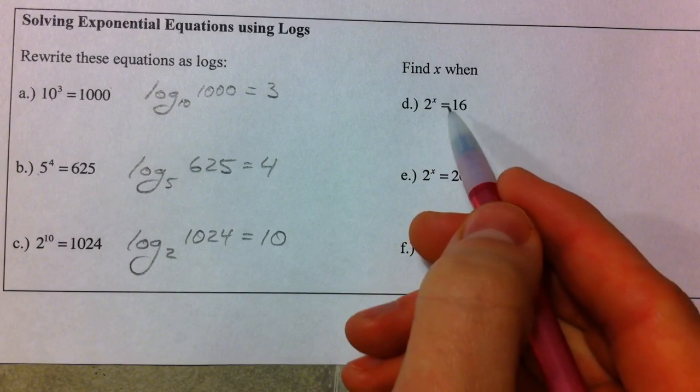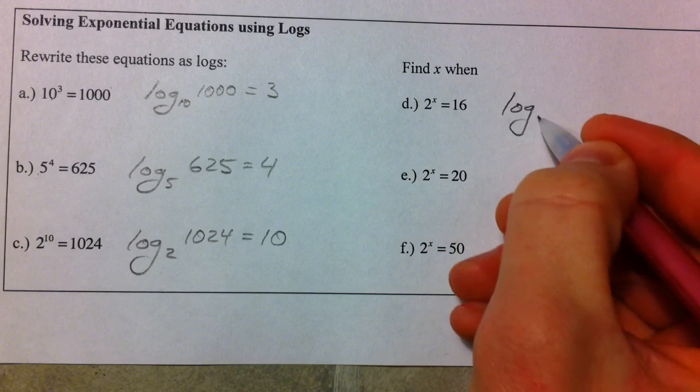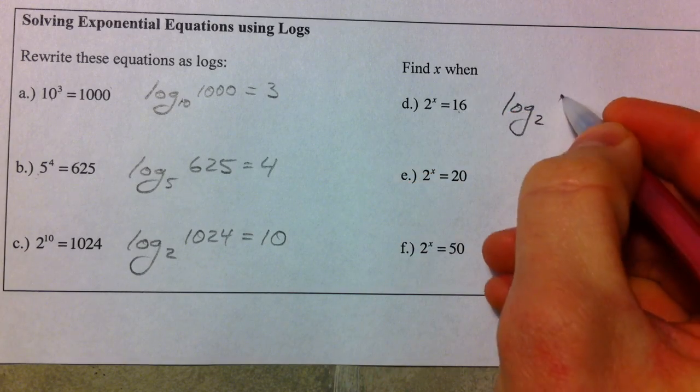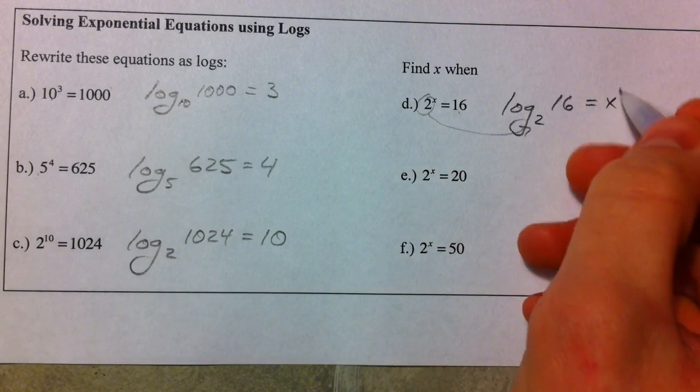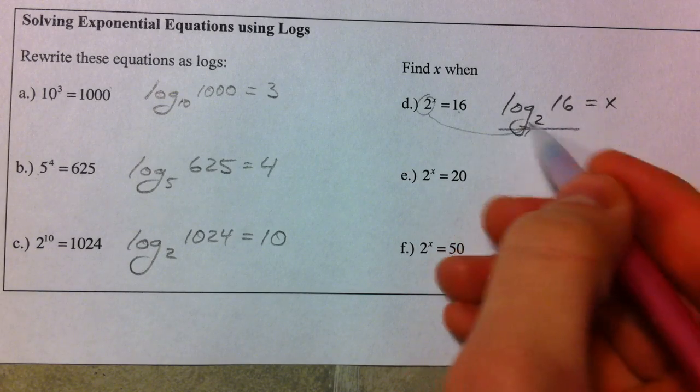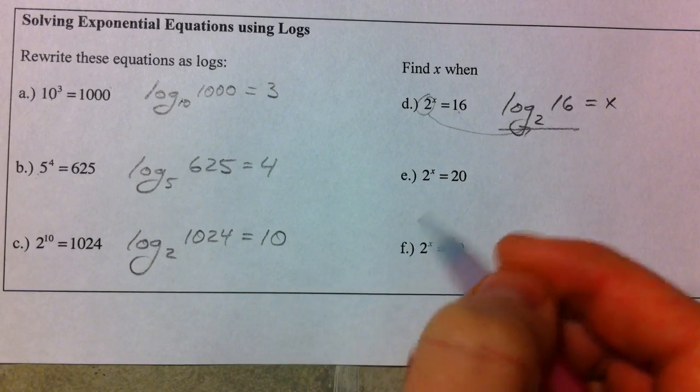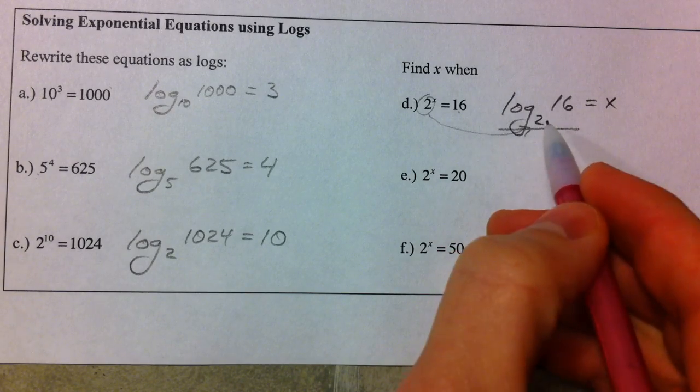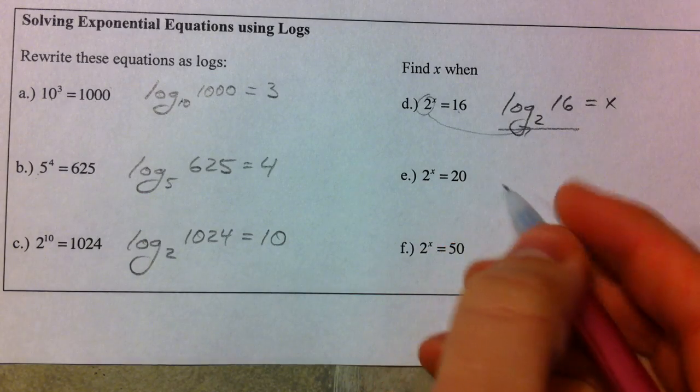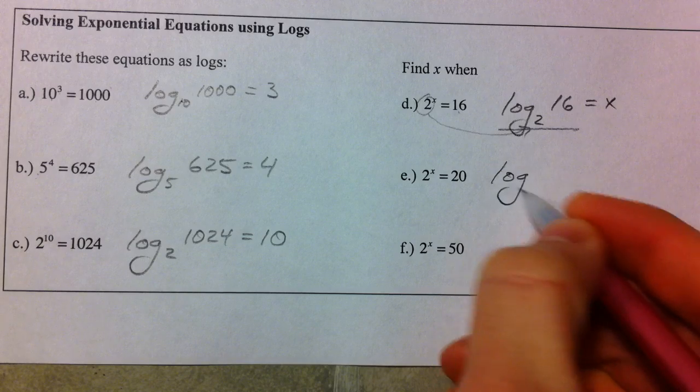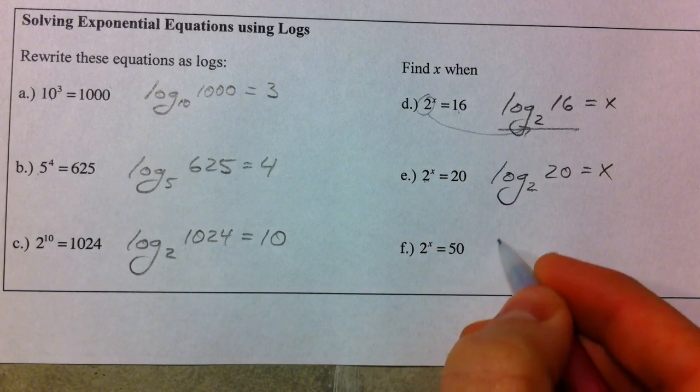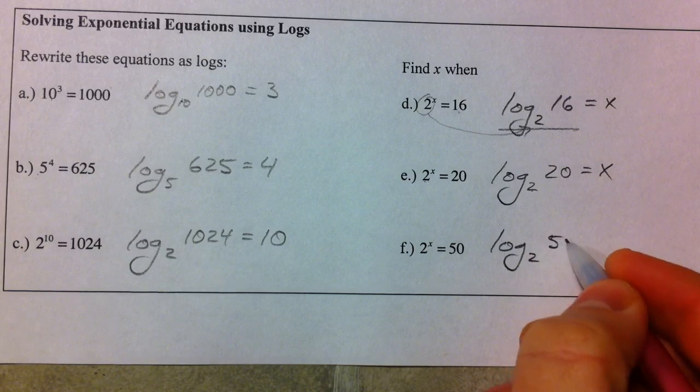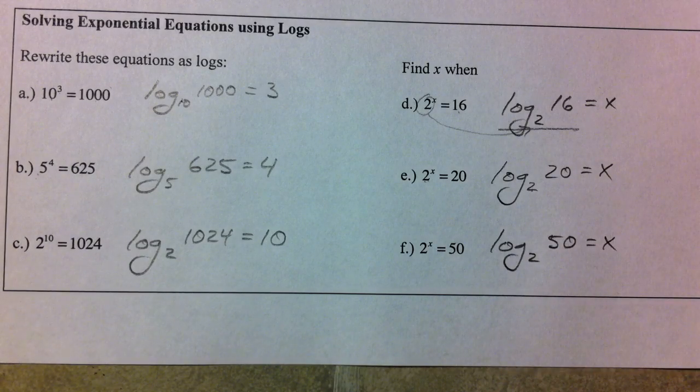Log base 2 of 16 equals x. Base of the exponent becomes the base of the log, and now the x is all by itself. So if only we could evaluate that. Now we didn't really need logs for that, and our calculator can't do that outright, but I'll show you how we can adjust it for it. Log base 2 of 20 equals x. Base of the log, base of the exponent. Log base 2 of 50 equals x. Let's get really good at changing back and forth between those two things.